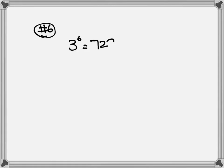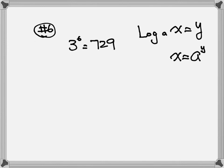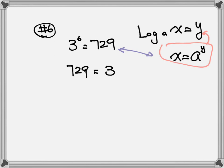Now let's go back to number 6. We have 3 to the 6 is equal to 729. So here they're giving us in exponential format and we want to change to the log format. The orders are actually reversed, so step 1, you're going to reverse everything back — switch both sides — so it becomes 729 is equal to 3 to the 6.